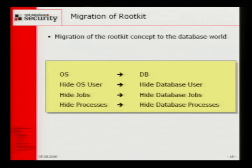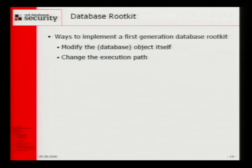If you want to migrate this concept into the database world, we need an informal definition of a rootkit: we are hiding objects like users, jobs, and processes in the operating system, and now we try to hide database users in the database. Generally there are two concepts to implement a rootkit: one is to modify the object itself — for example in the OS world we modify the ls command — or we change the execution path, like the PATH variable.